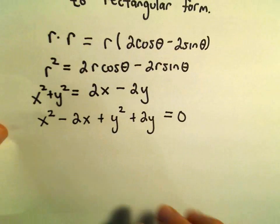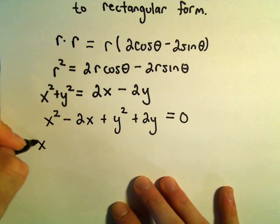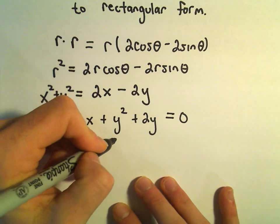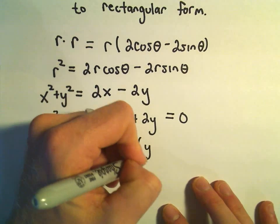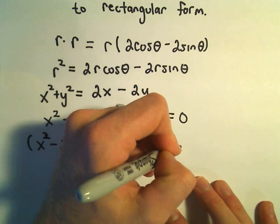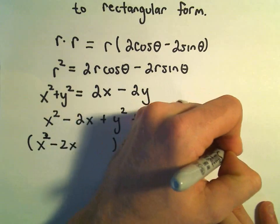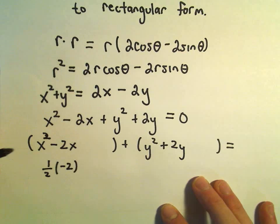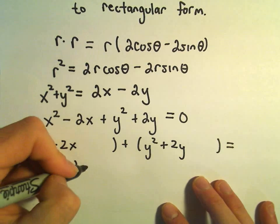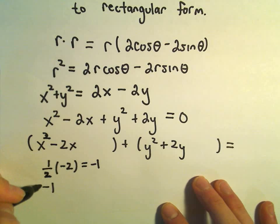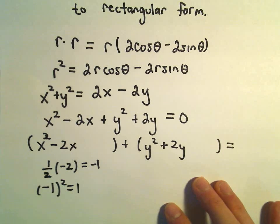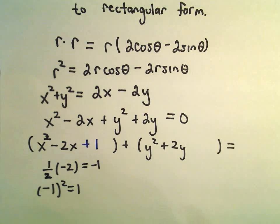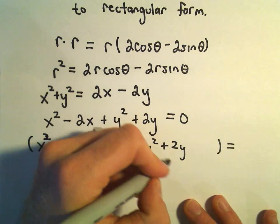And now to make this something hopefully a little more familiar, we can even complete the square. So we'll have x squared minus 2x, y squared plus 2y. So again, we take one half of the coefficient on the x term. So we'll take one half of negative 2, which is negative 1. If we take negative 1 and square it, we get positive 1. So that's what I'm going to stick inside the first set of parentheses.